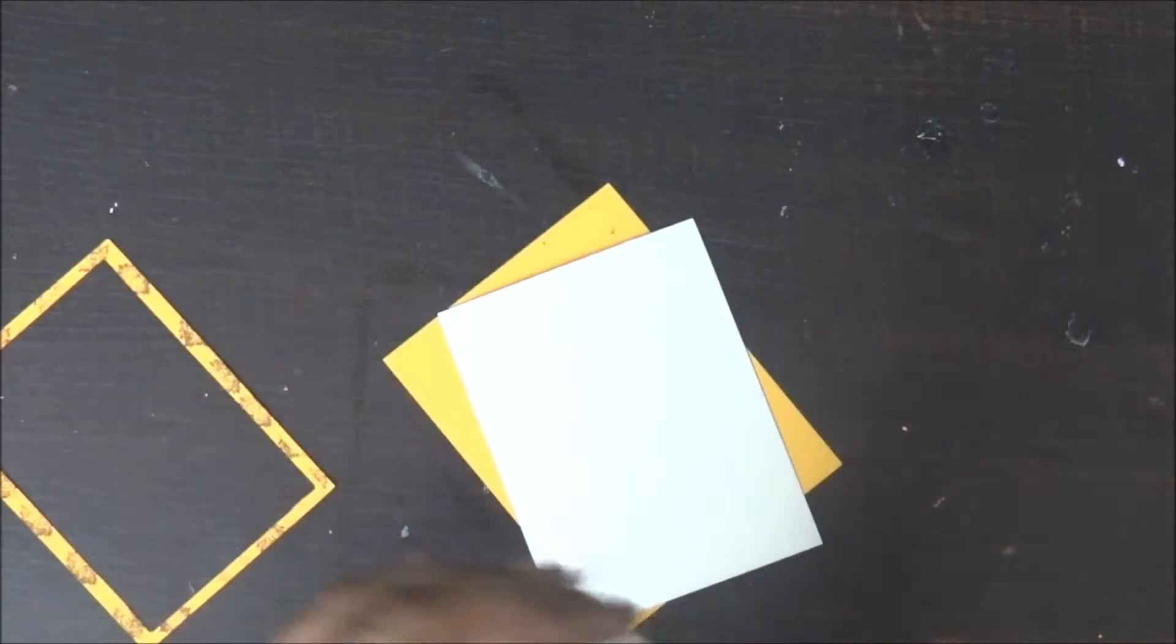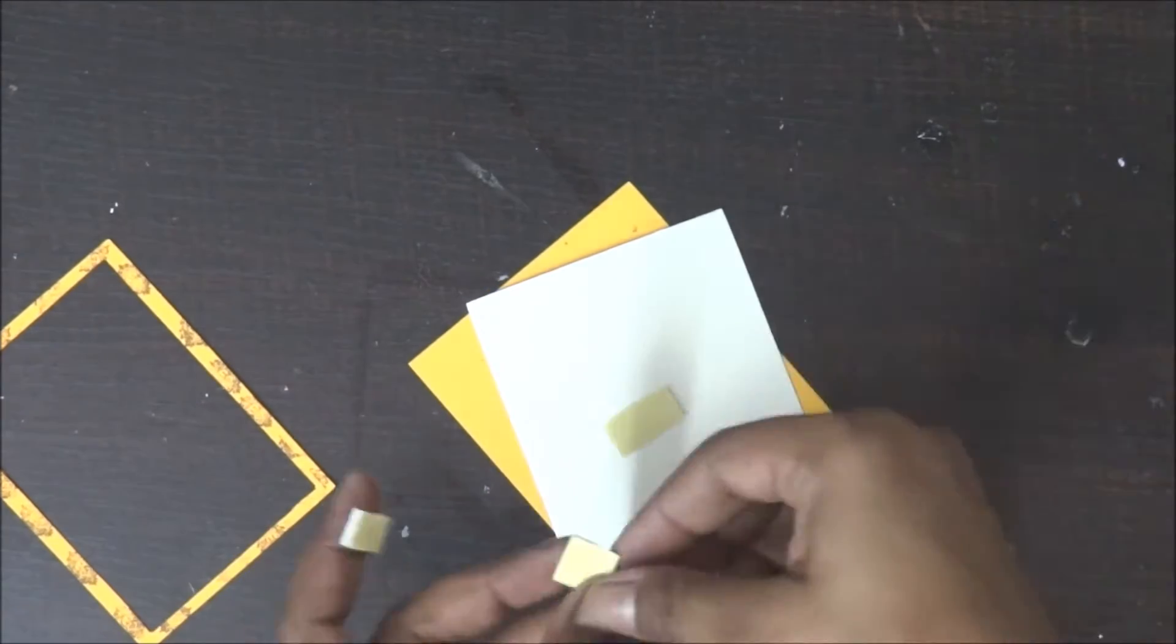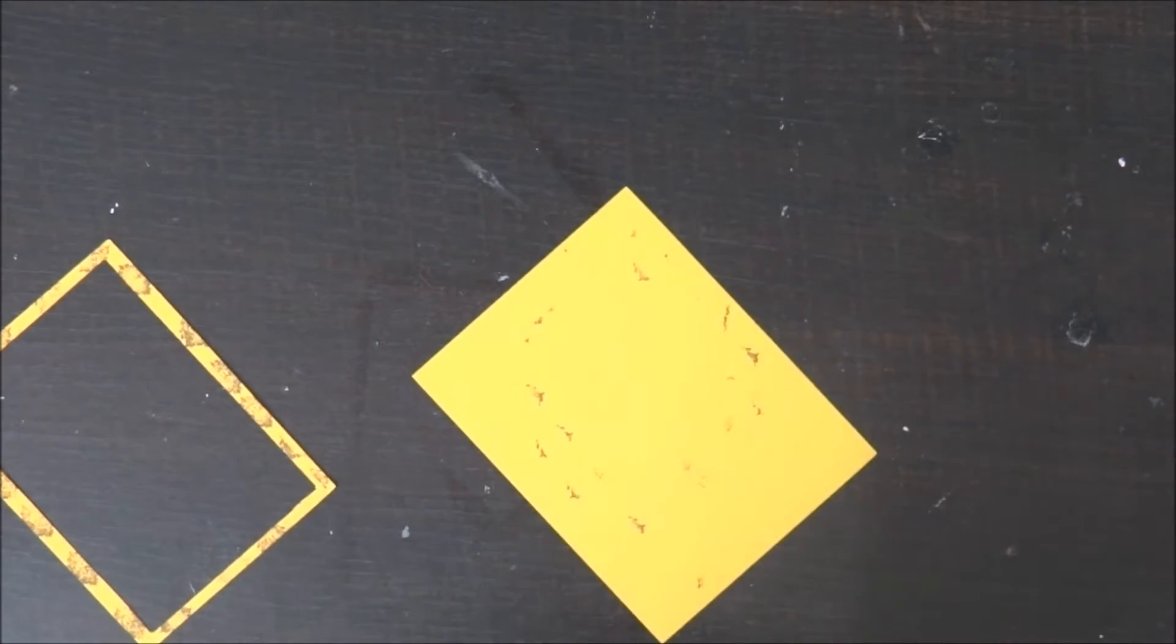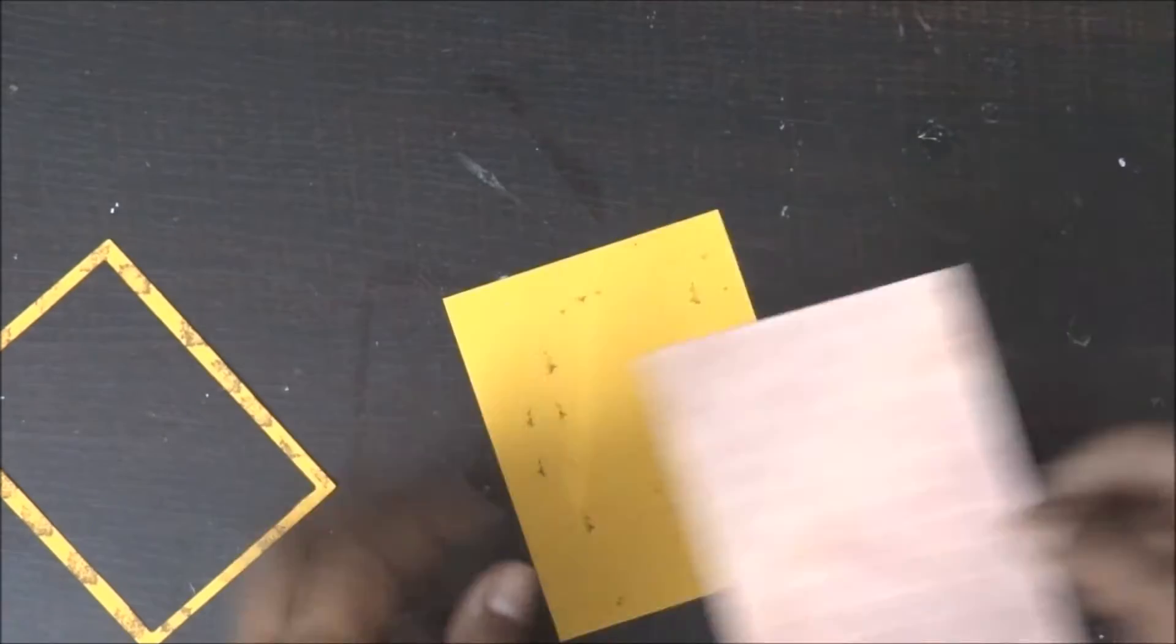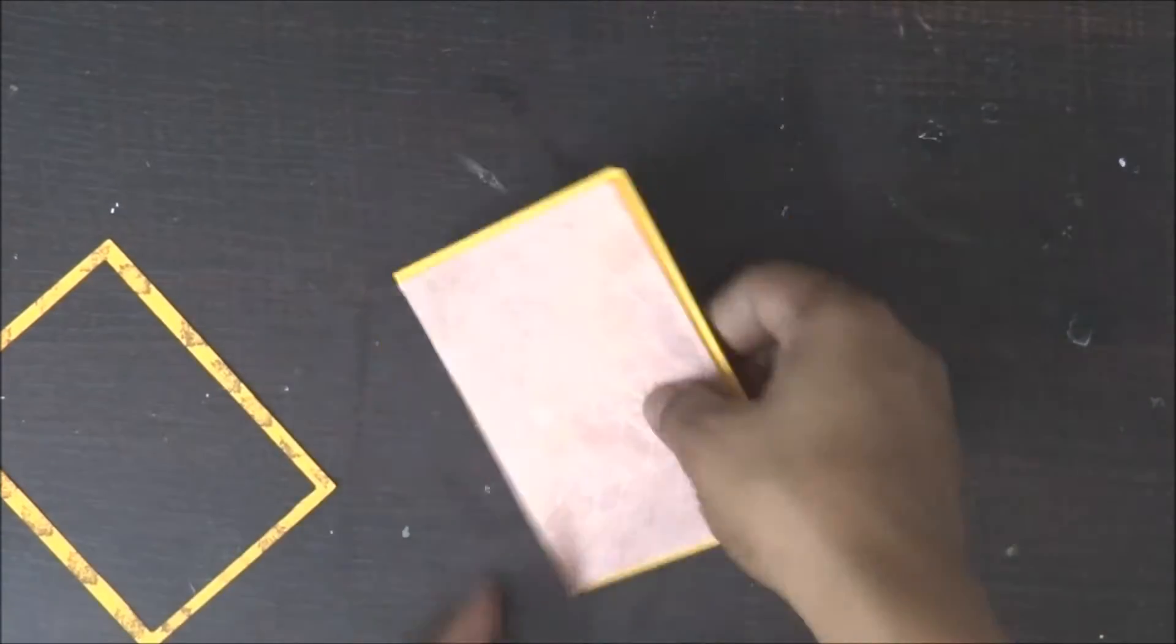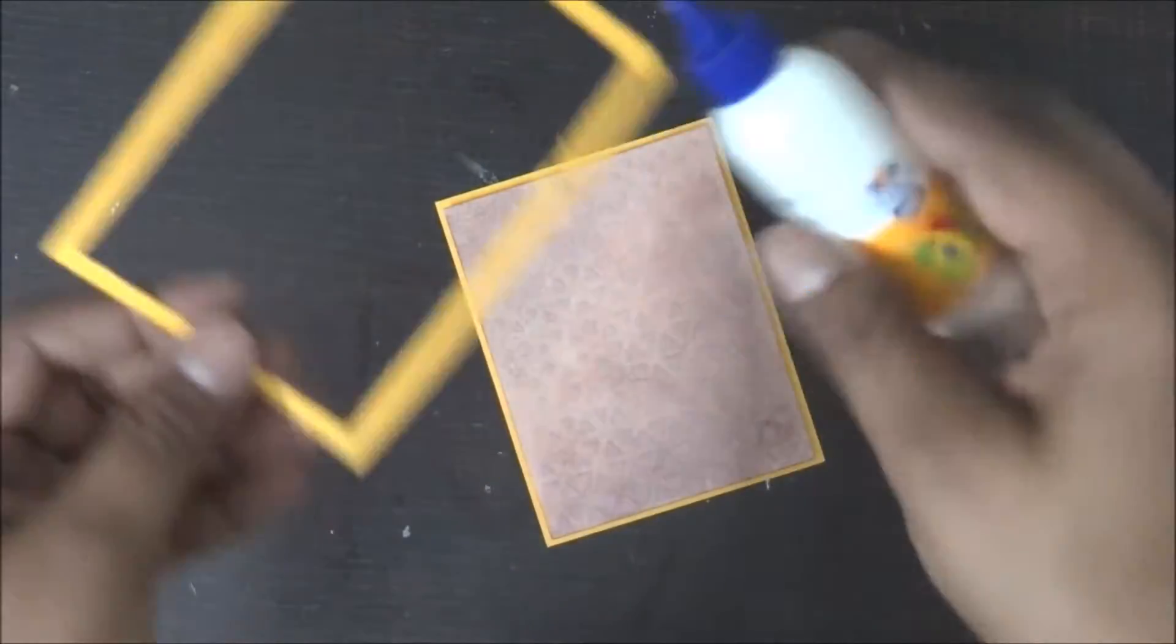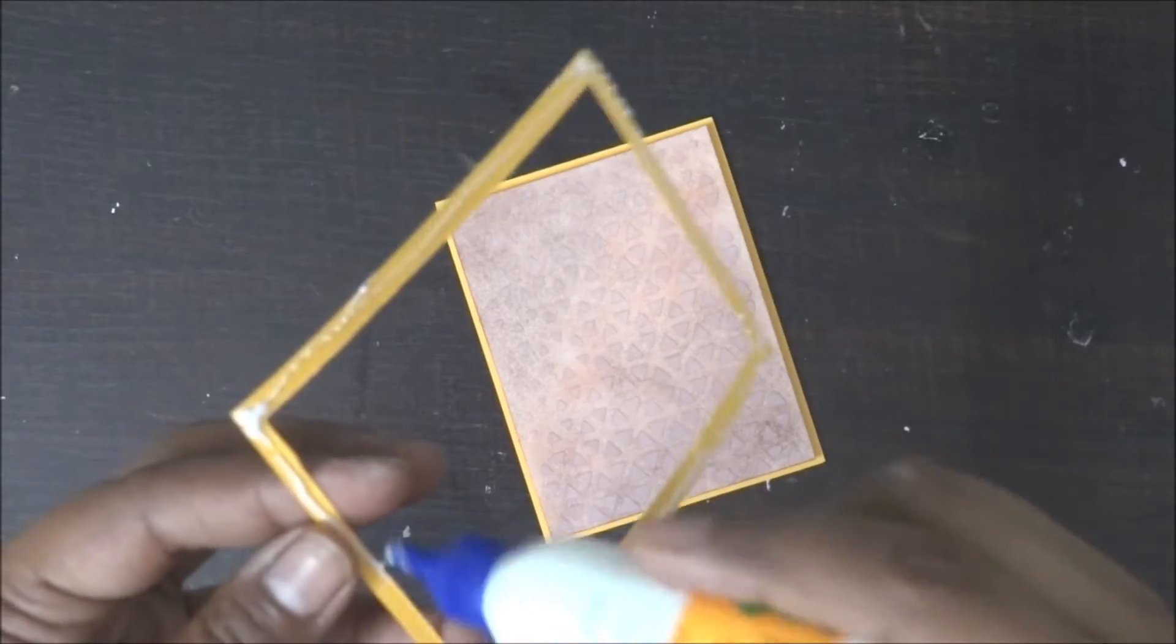Now I'll be using foam tape to stick my mixed media card on my base, and I'll be using my local adhesive just to make sure that it sticks out properly. For my borders, I'll be just gluing the edges and stick it on my top layer of the card.